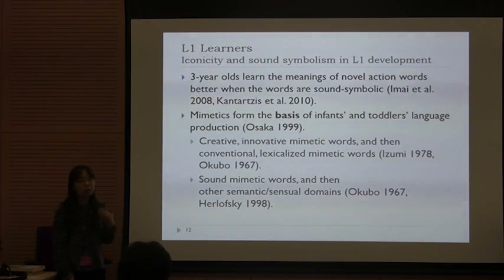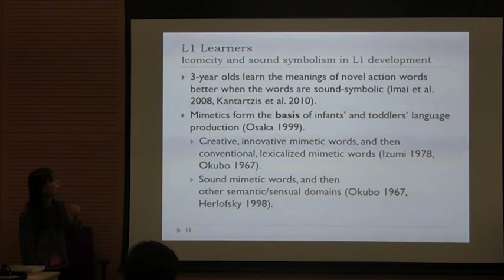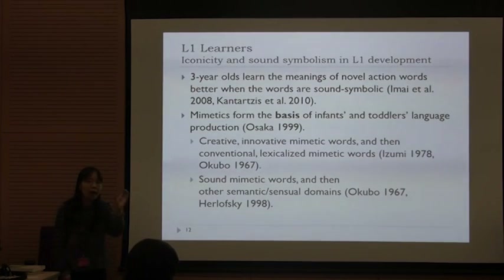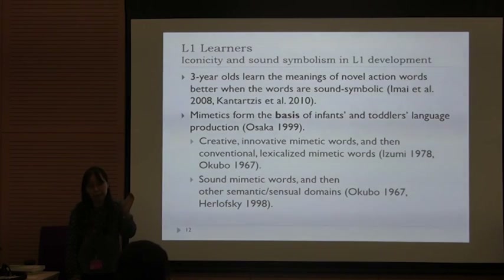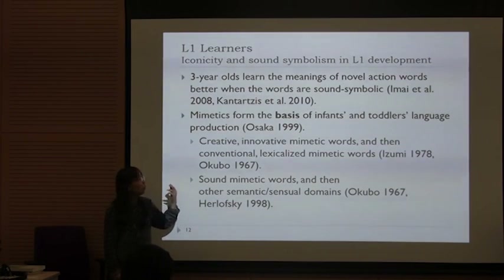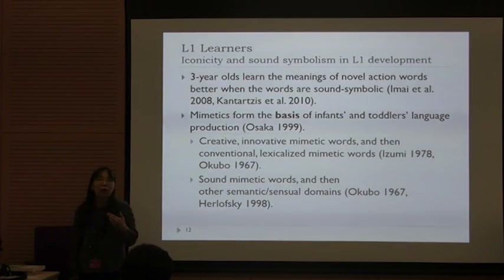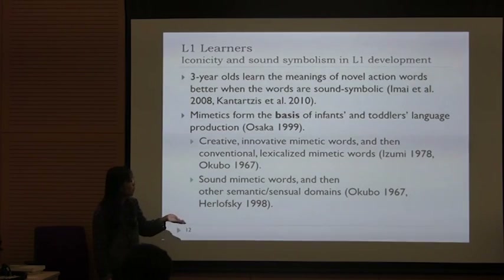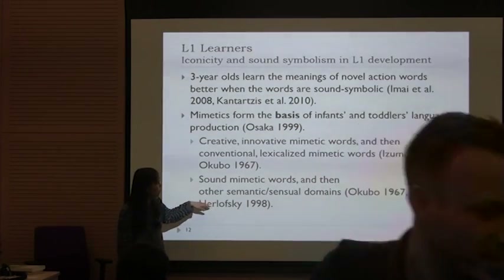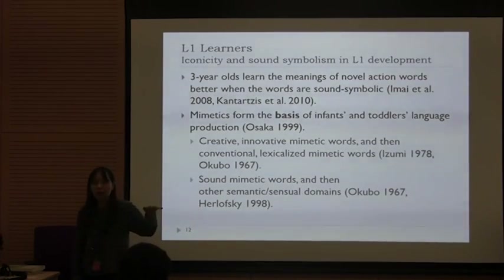In terms of first language acquisition research, it is known that three-year-olds learn the meaning of novel actions by experiment. They found that if words have some symbolic elements — the kind contained in mimetics — then children can learn these novel words more quickly and easily. In terms of natural development of infant language, children tend to use creative, innovative mimetic words first, and then later start using more lexicalized, established mimetic words. Young children tend to start using mimetics that refer to sound, then later use mimetics of other semantic domains.